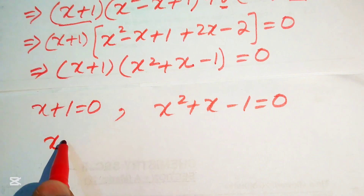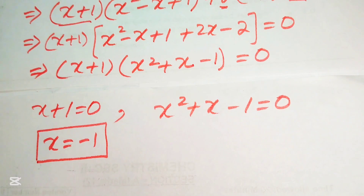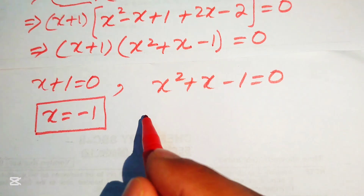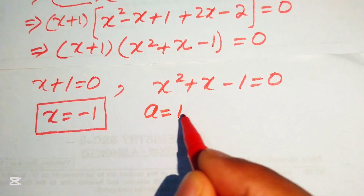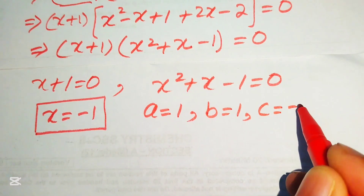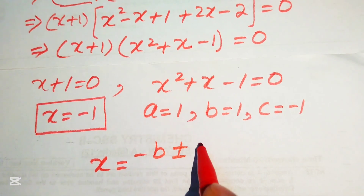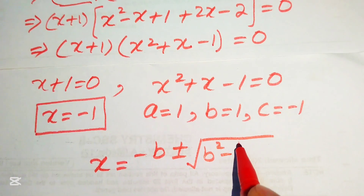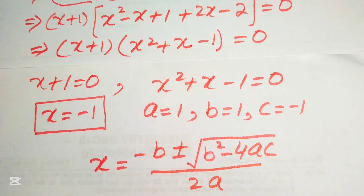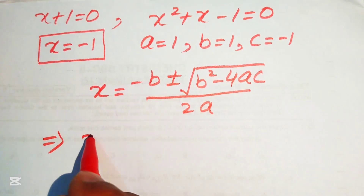From x + 1 = 0 we get x = -1 as the second root. To find the remaining roots we apply the quadratic formula to x² + x - 1 = 0, with coefficients a = 1, b = 1, c = -1. The formula is x = (-b ± √(b² - 4ac)) / (2a).